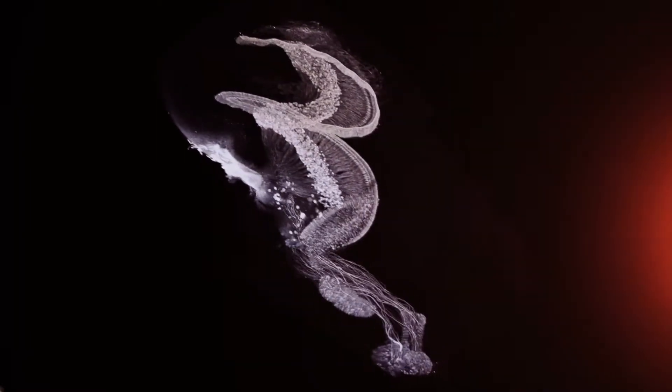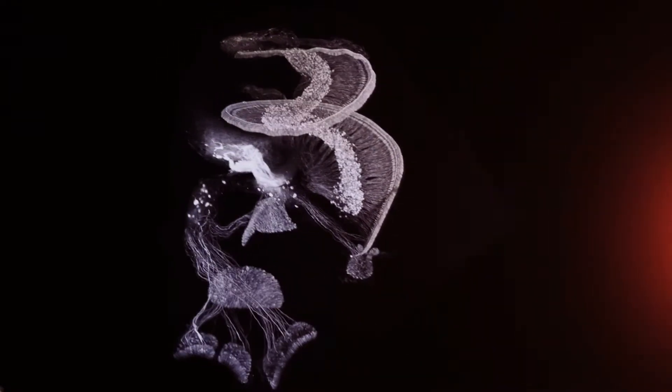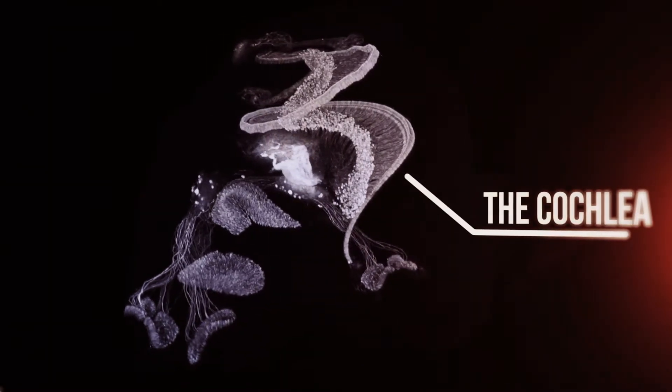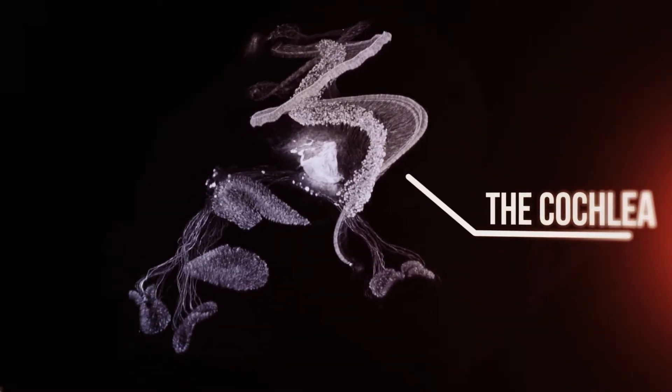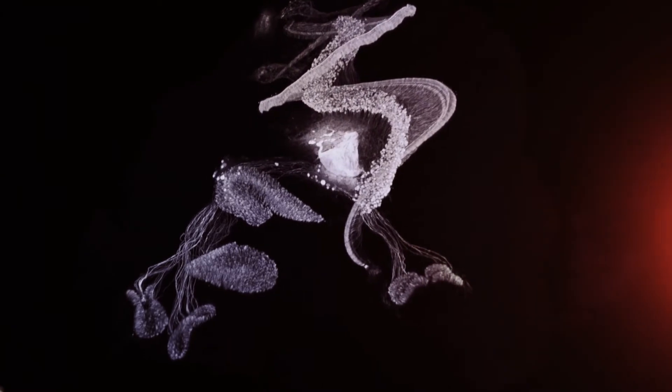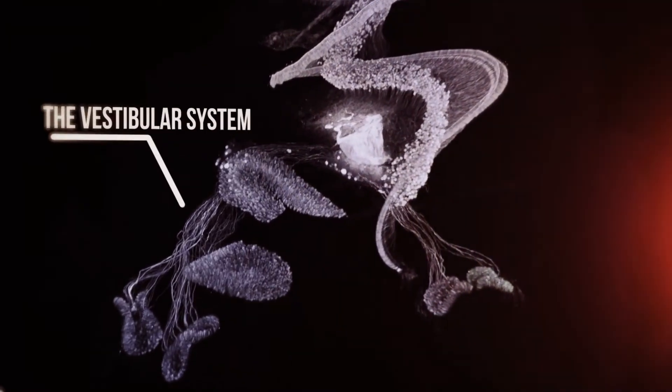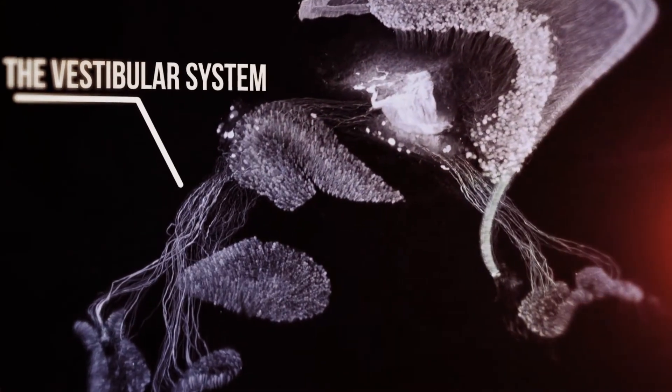So the function of the inner ear is actually multiple. You have on one side the cochlea for the audition, but on the other side, a much less known organ is this vestibular system, which is responsible for the sensation of balance, basically how you can keep your position in space.